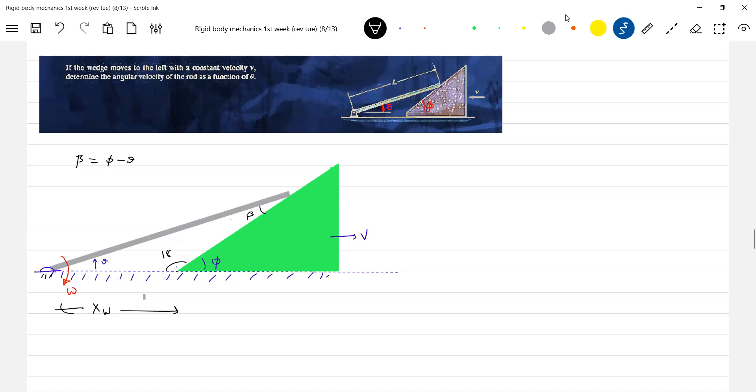This angle will be 180 minus phi, and this is l. So let me directly go for sine rule: x_w divided by sine beta should be equal to l divided by sine of...